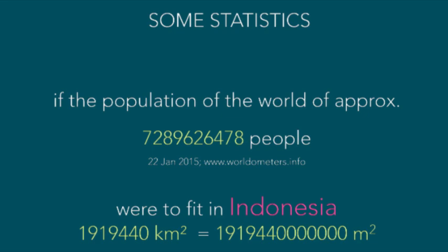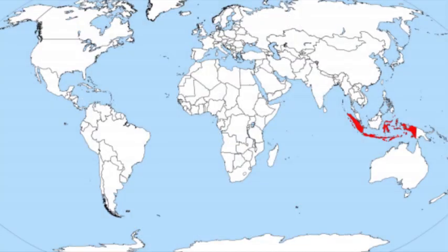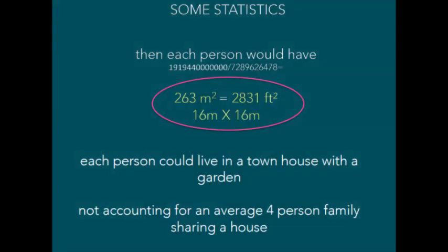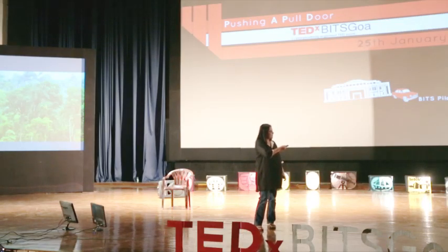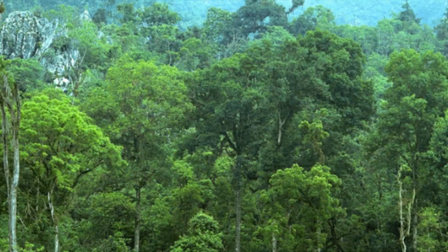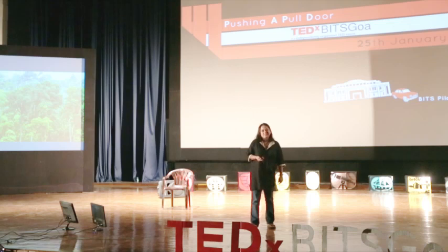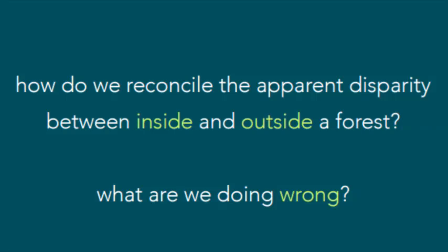These problems are often based on resource scarcity. If you look at the world population of approximately 7.3 billion and fit it in Indonesia, each person would have 263 square meters. If you fit the same population in the Amazon, each person would have over three-quarters of a square kilometer. This piece of land already contains enough biomass, fertility, and probably building material to house a single person. How do we reconcile these differences between inside forests and outside of forests?